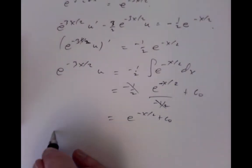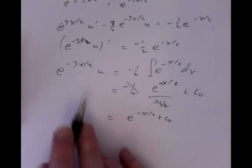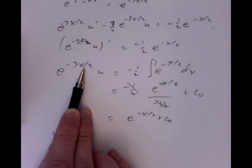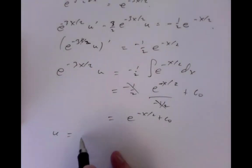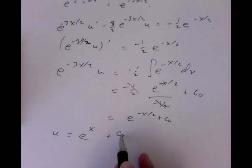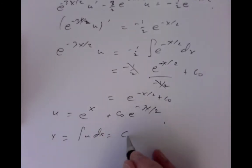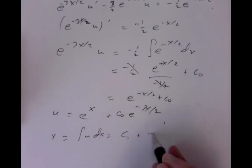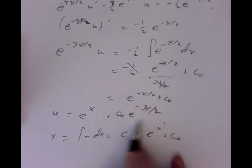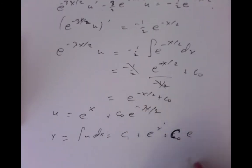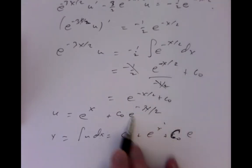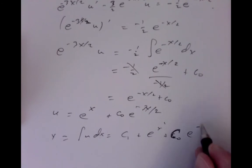So this and this cancel each other out, giving us e to the minus x over 2 plus a constant equal to e to the minus 3x over 2 times u. Therefore u is obtained by multiplying both sides by e to the 3x over 2, giving u equals e to the x plus a constant times e to the minus 3x over 2. Then y has to be the integral of u dx, giving another constant of integration plus e to the x, plus the previous constant absorbed to capital C times e to the minus 3x over 2 — if I've got it all right. So this is hopefully the solution of our original problem 2y double prime plus e to the x equals 3y prime, though the notes may have it wrong.